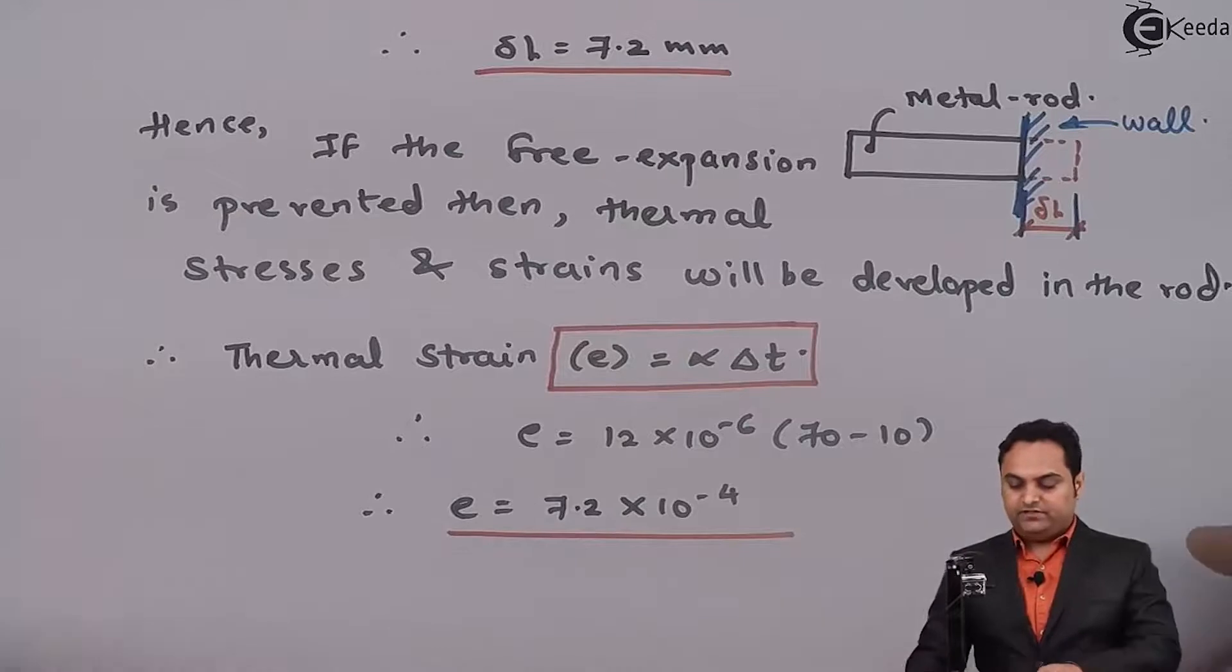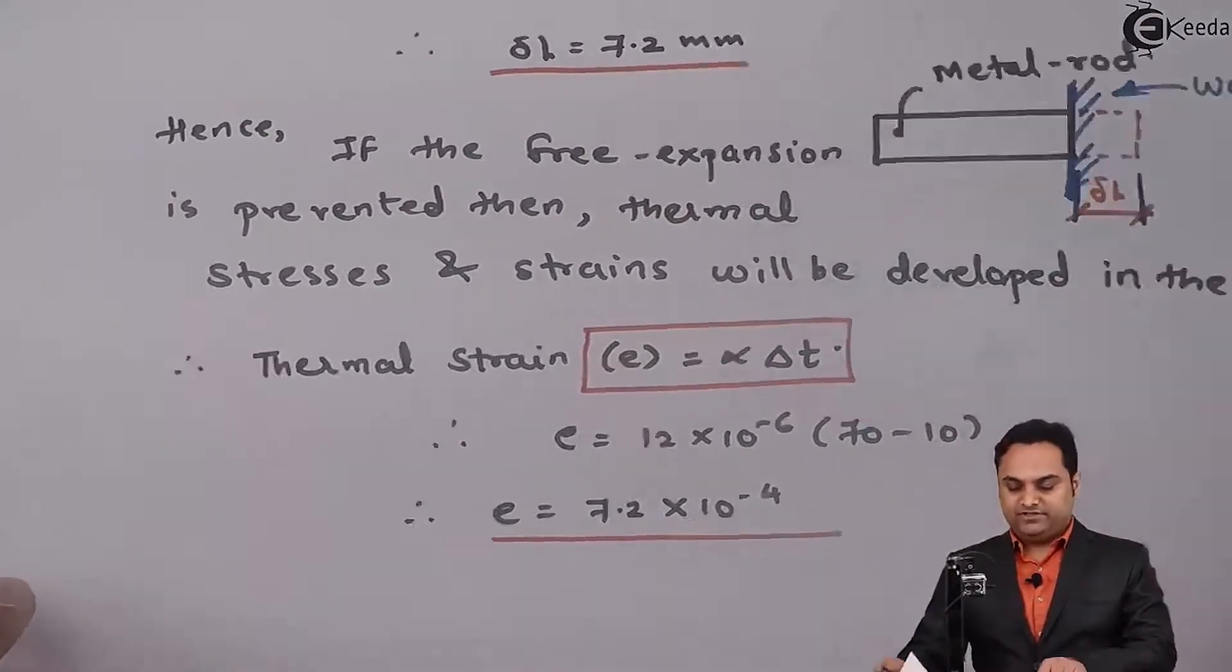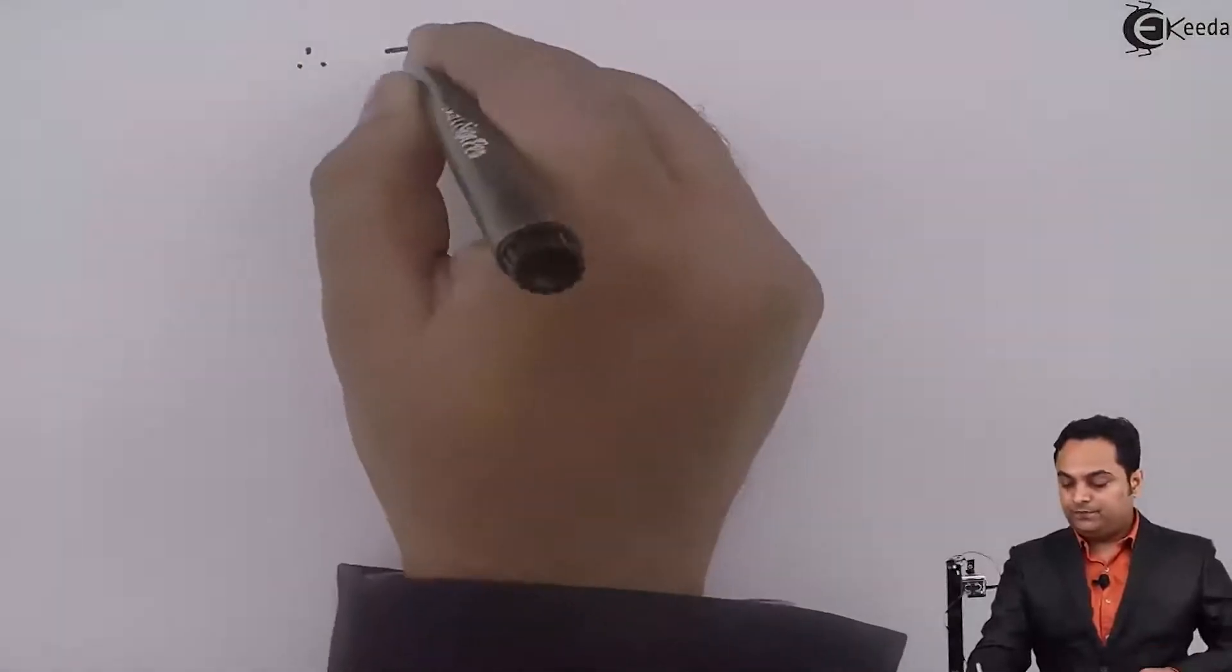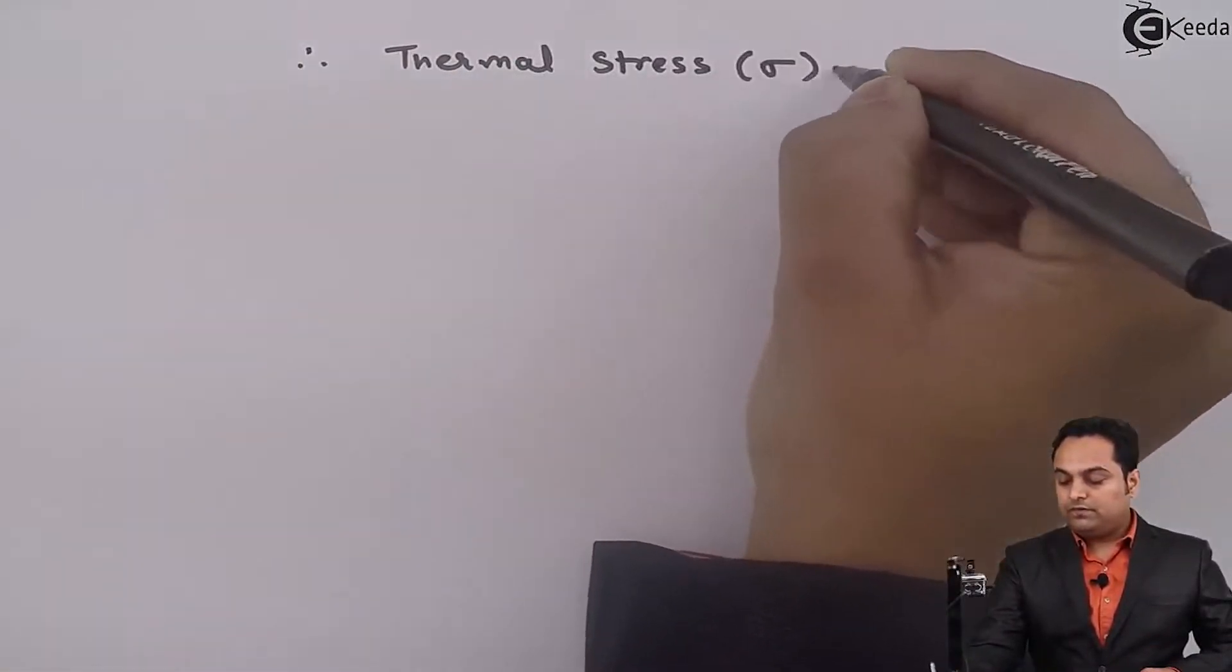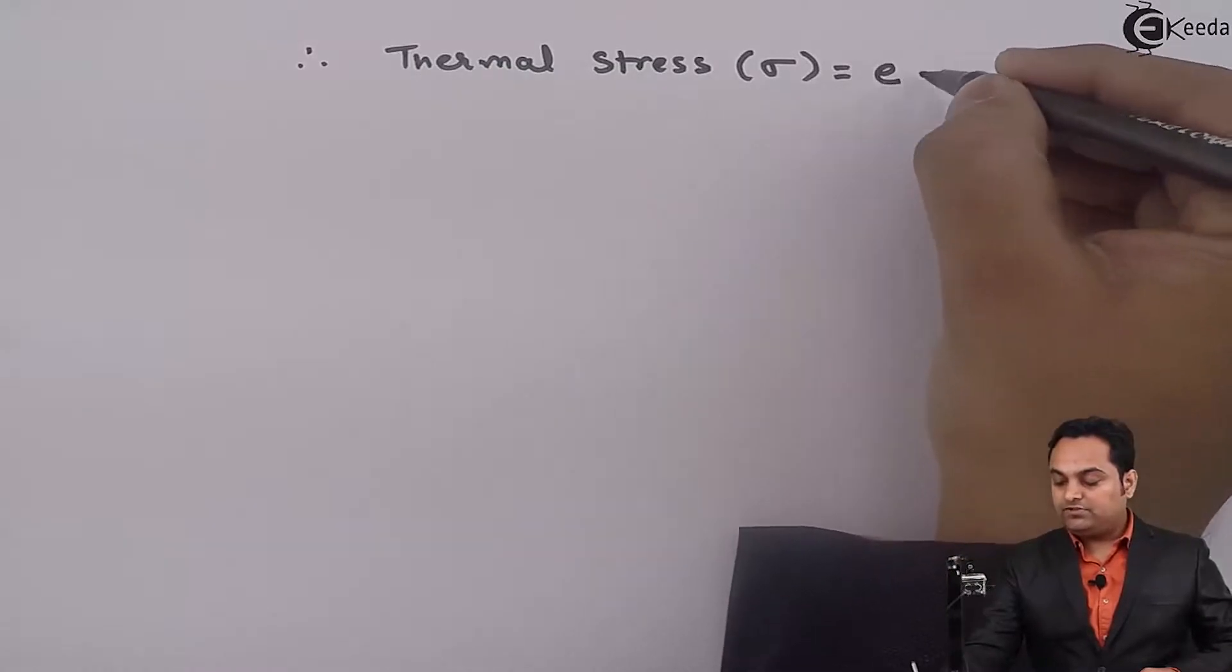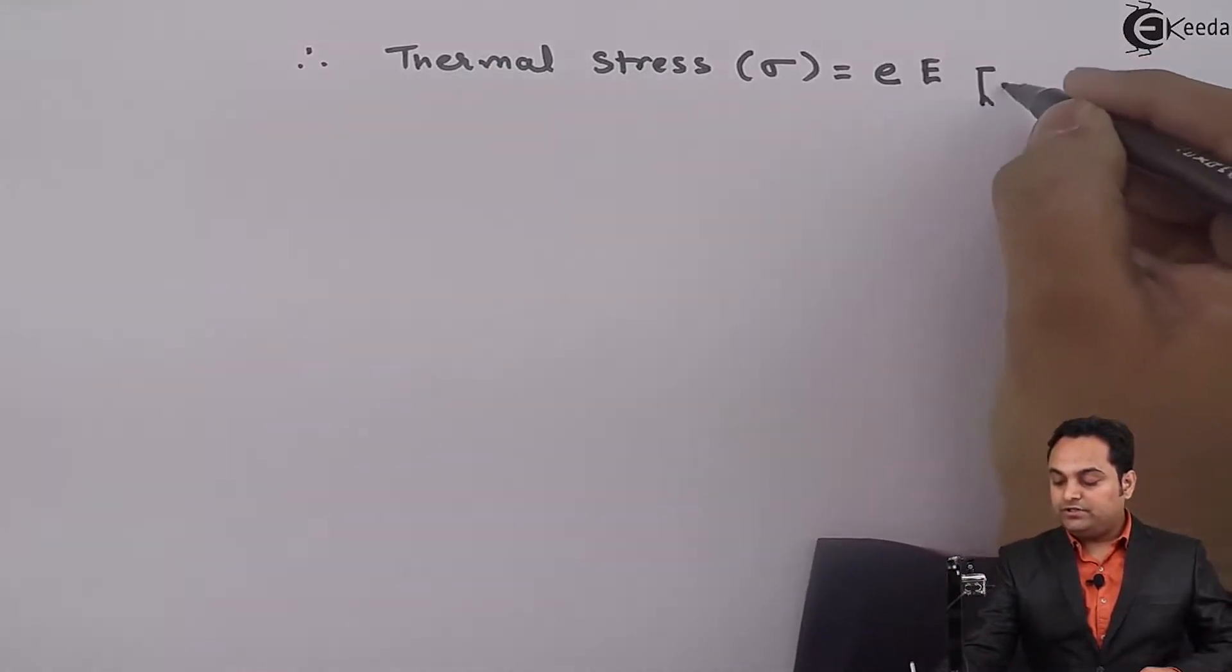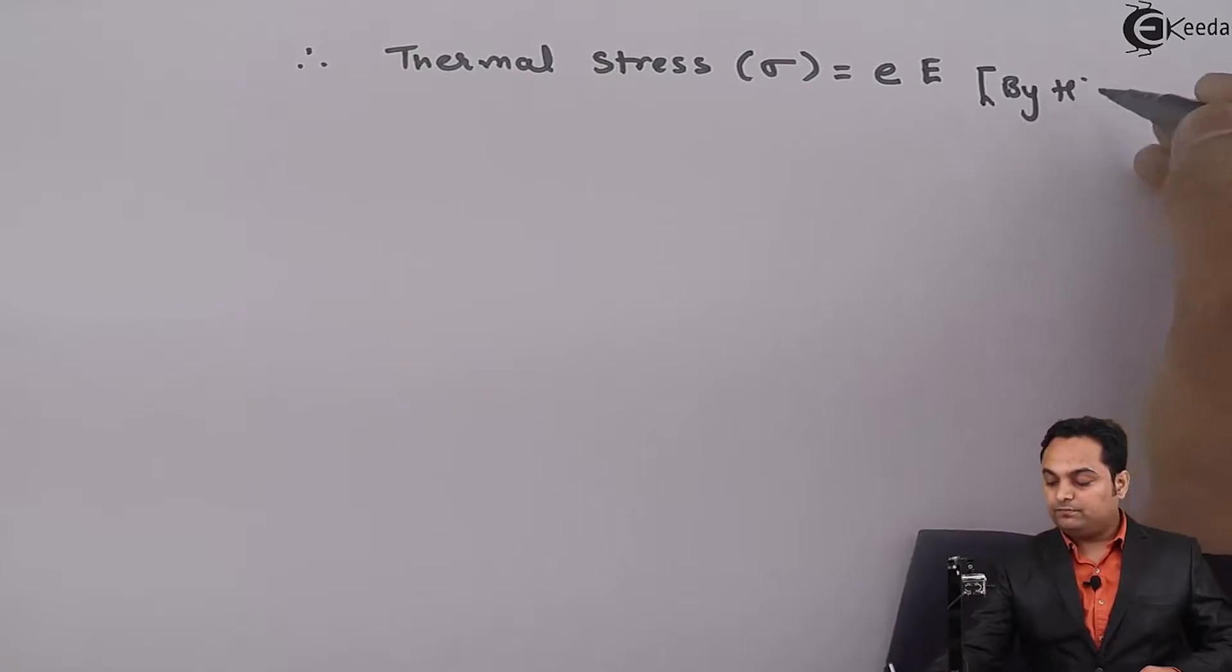Next, after getting the thermal strain, I can find the thermal stress. So, therefore, thermal stress σ is equal to thermal strain into Young's modulus. This formula has come from Hooke's law.